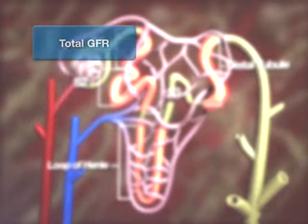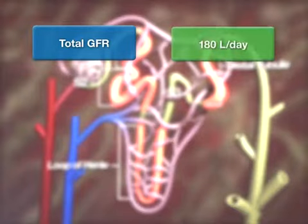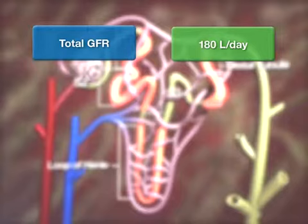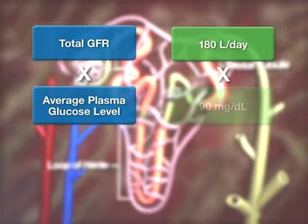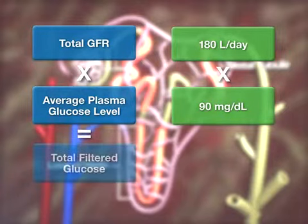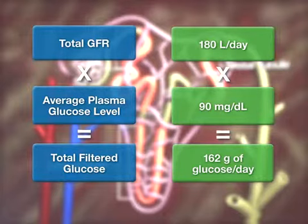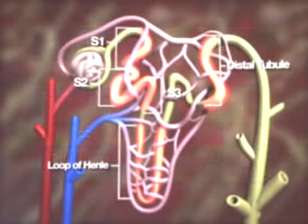In healthy individuals, the total GFR — glomerular filtration rate — is around 180 liters of plasma per day, which, based on an average plasma glucose of 90 milligrams per deciliter, corresponds to approximately 160 grams of glucose filtered out of the plasma every 24 hours.